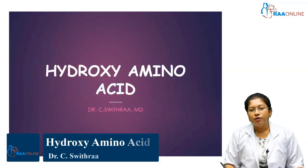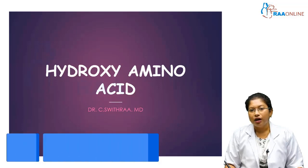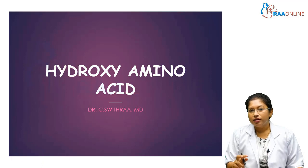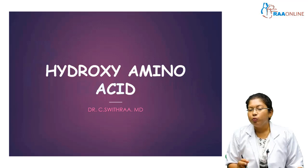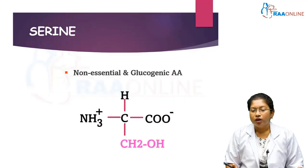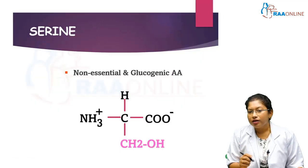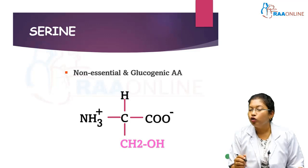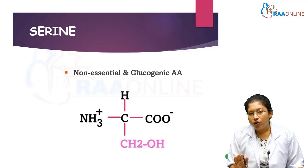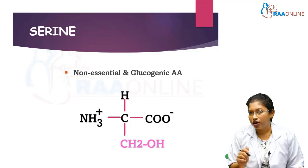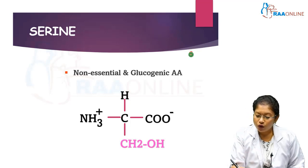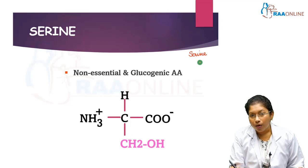Hello Raw Online Learners. We have seen aliphatic amino acid metabolism, that is glycine and alanine. There is a second important aliphatic compound: the hydroxy amino acid. We have two important hydroxy amino acids - serine and threonine. Serine is non-essential and glucogenic, whereas threonine is essential and glucogenic.